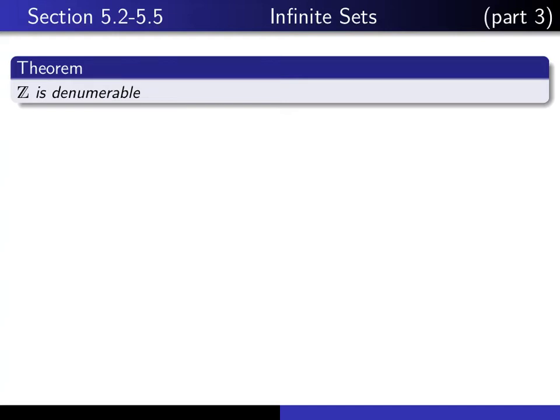This is part 3 in our series of lectures on infinite sets, and in this lecture we're going to write the proof of the theorem that Z is denumerable. In order to prove this theorem, we have to find a bijection from N into Z. That's what it means to say that Z is denumerable.